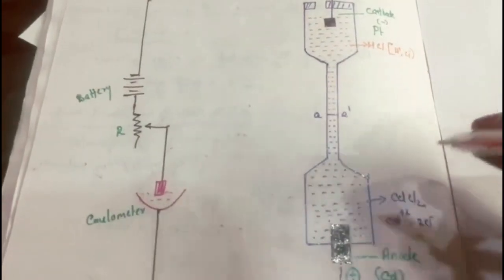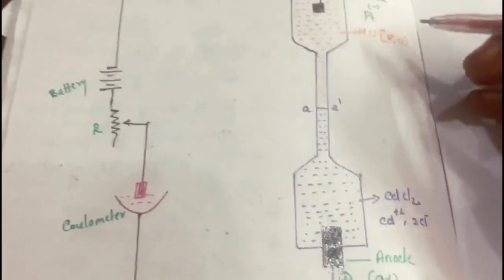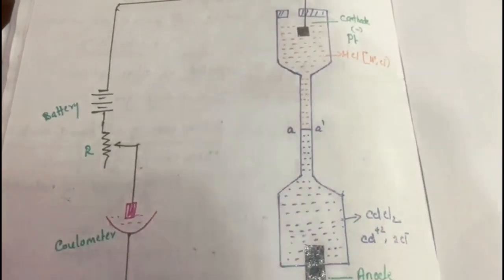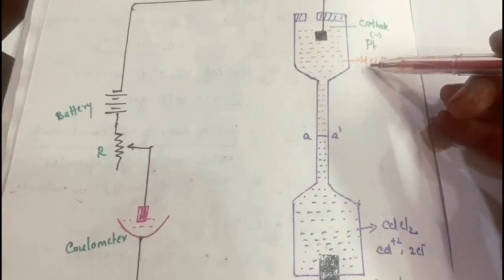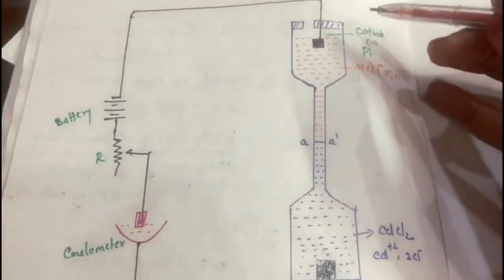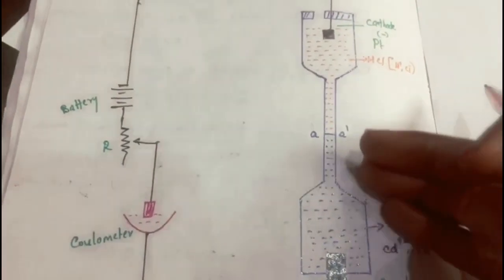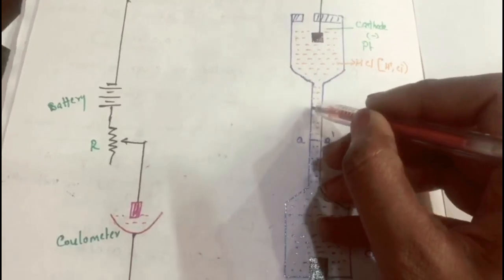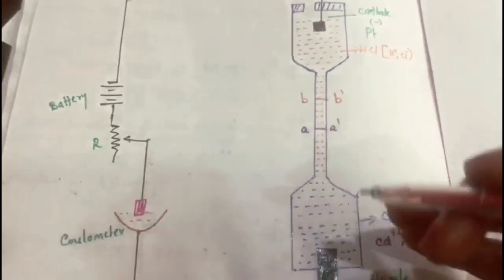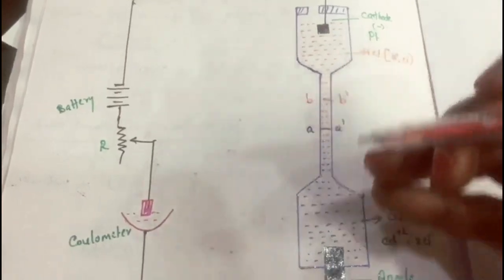A small current is made to flow through the conductivity cell. When current passes, cations move towards the cathode and anions move towards the anode. H⁺ cations move towards the cathode along with Cd²⁺, which also moves towards the cathode, while Cl⁻ moves towards the anode. As Cd²⁺ moves towards the cathode, the boundary shifts upward — from AA' to BB' — on passing electricity because of the movement of ions.